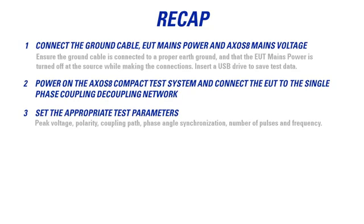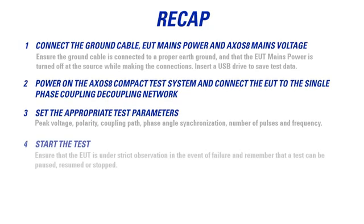Power on the Axos 8 compact test system and connect the EUT to the single-phase coupling-decoupling network. Set the appropriate test parameters. This includes peak voltage, polarity, coupling paths, phase angles, synchronization, number of pulses, and frequency. Start the test. Ensure that the EUT is under strict observation in the event of failure and remember that a test can be paused, resumed, or stopped.